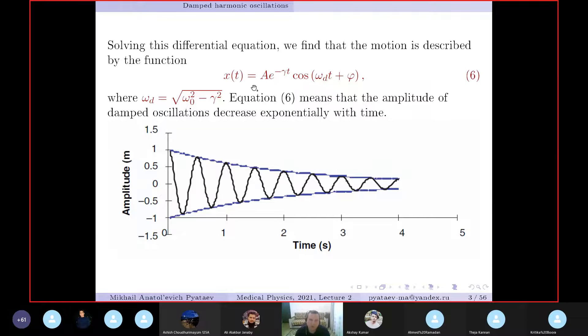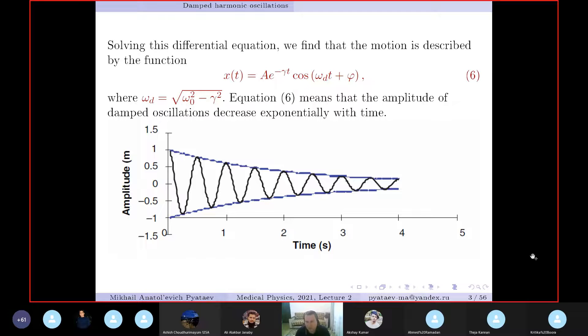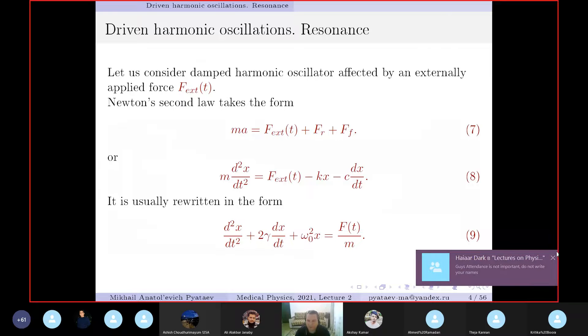This is the equation of damped oscillations. The amplitude decreases with time exponentially. An example graph is shown here - oscillations become smaller and smaller. Please do not write your names here; I'm not interested in attendance since you can watch lectures later.